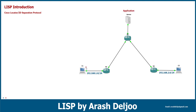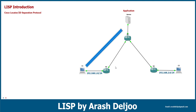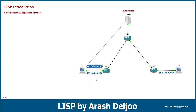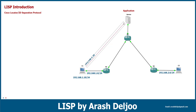We need to transfer some files and data from the server to Computer 1. Because of that, we have one established connection between Computer 1 and the server. The source IP of these packets is the IP address of Computer 1. Assume the IP address of Computer 1 is 192.168.1.10/24, so the source IP is 192.168.1.10, and the destination IP is the IP of the server. Until now, we don't have any problem.